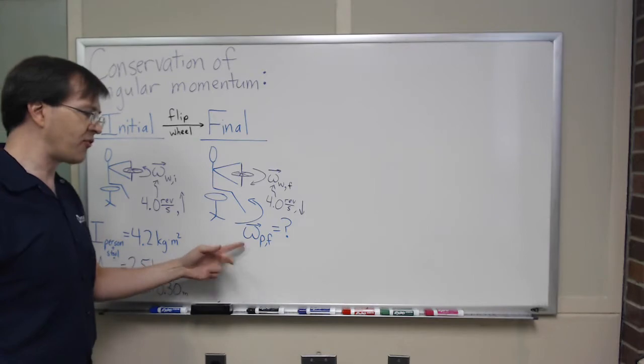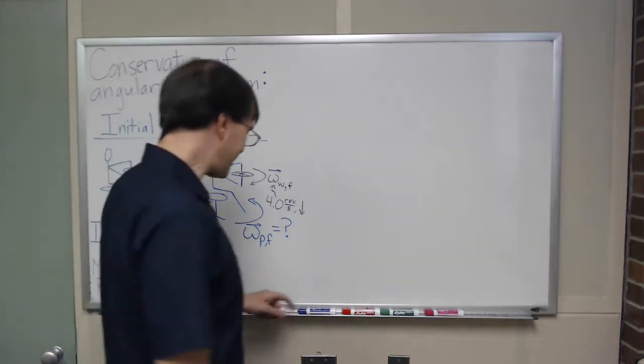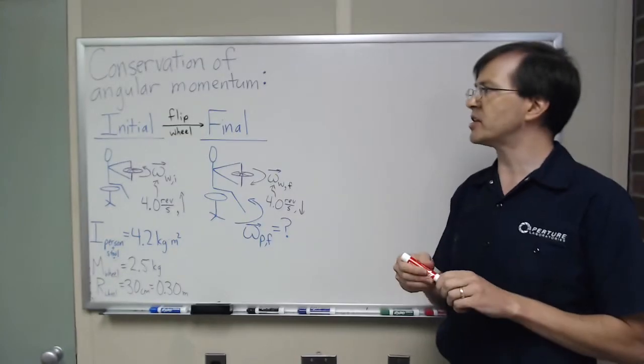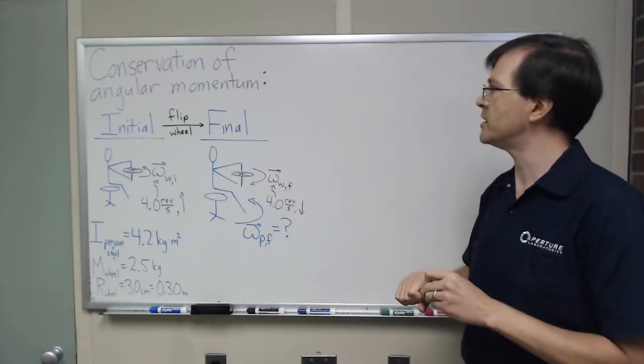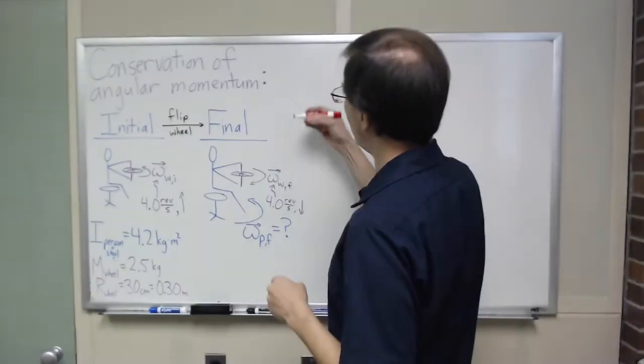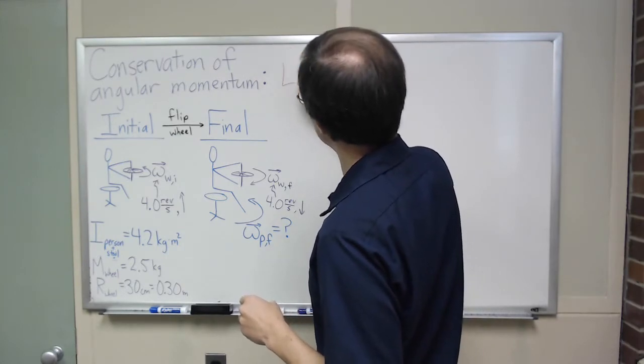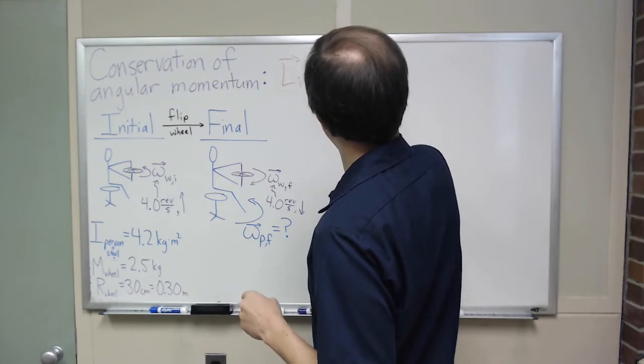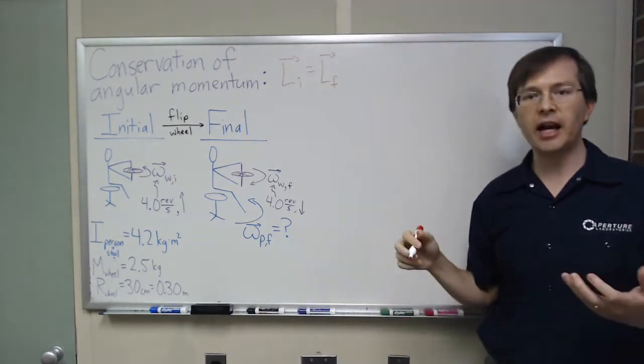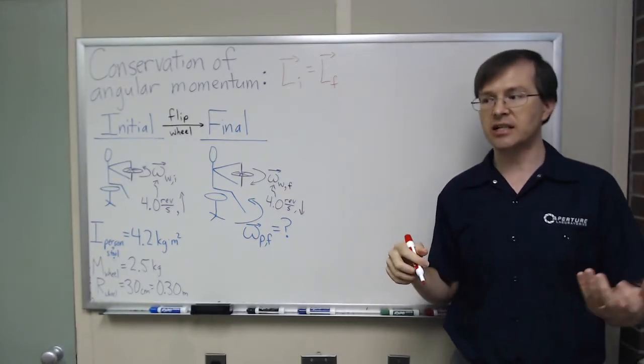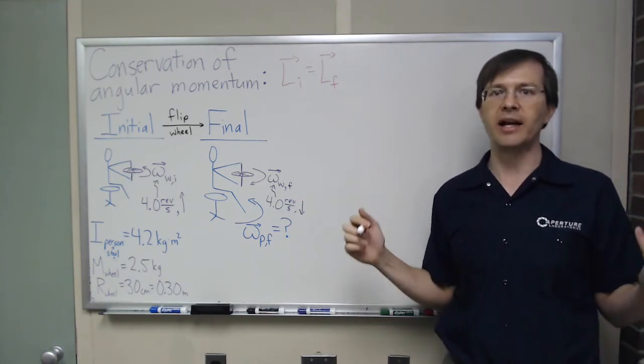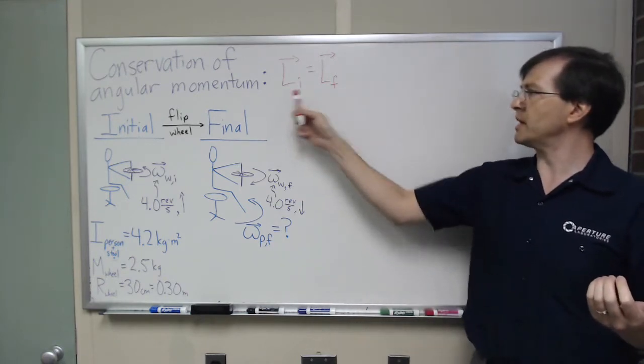Those are my ingredients. I want to solve for this unknown piece. And to do that, the master equation I'm going to use is the conservation of angular momentum master equation. Specifically, I know that L initial, angular momentum initial, equals L final, angular momentum final. And that equality is assuming that I'm in an isolated system, functionally isolated system. And the low friction bearings of the stool guarantee that I'm in a reasonably well isolated system.